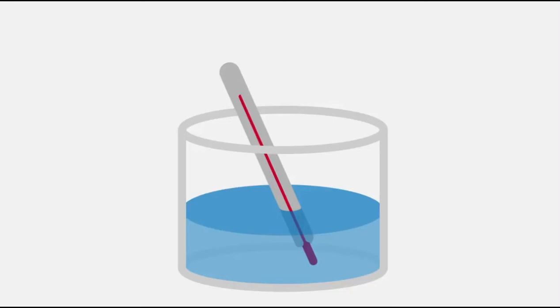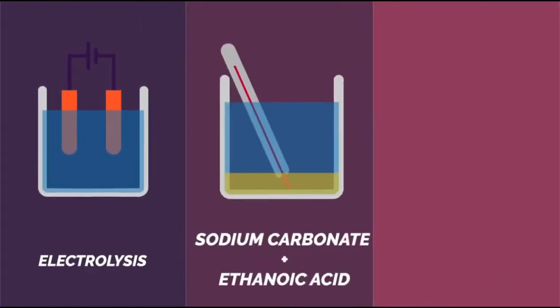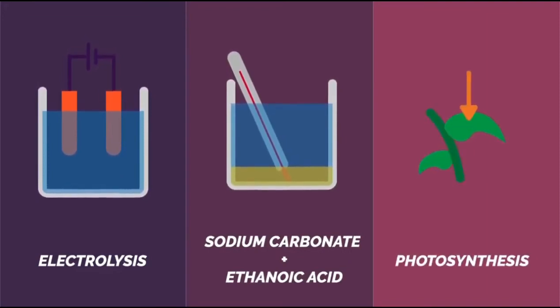Again, we can detect endothermic reactions with a thermometer, because the temperature would get colder. Some examples of endothermic reactions are electrolysis, the reaction between sodium carbonate and ethanoic acid, and photosynthesis.